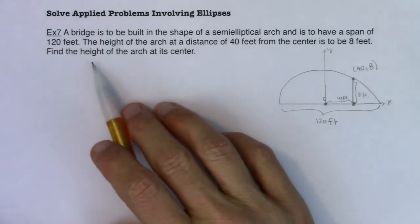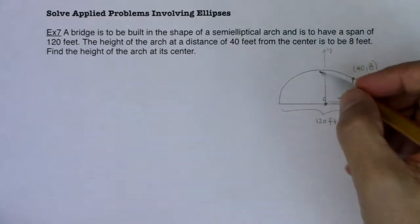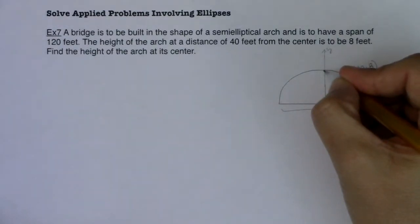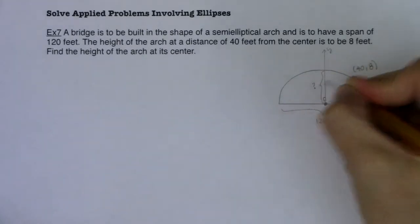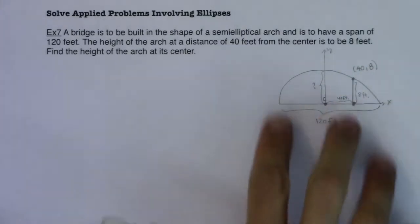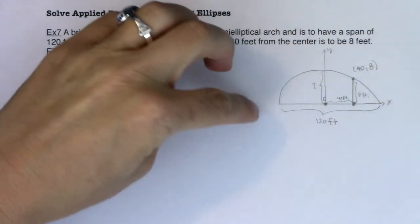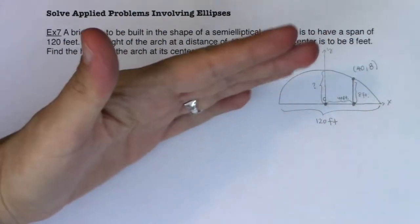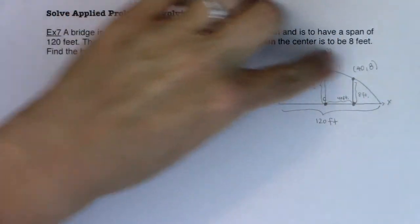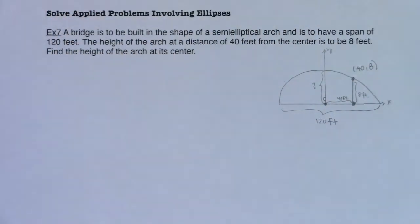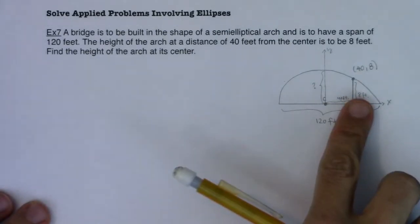Now this is find the height of the arch at its center. So really what I'm being asked to find is this value right here. Now this is gonna be a horizontal ellipse because if you have a bridge it's gonna be wider than it is tall. So I've got a horizontal ellipse and that means my major axis is horizontal.